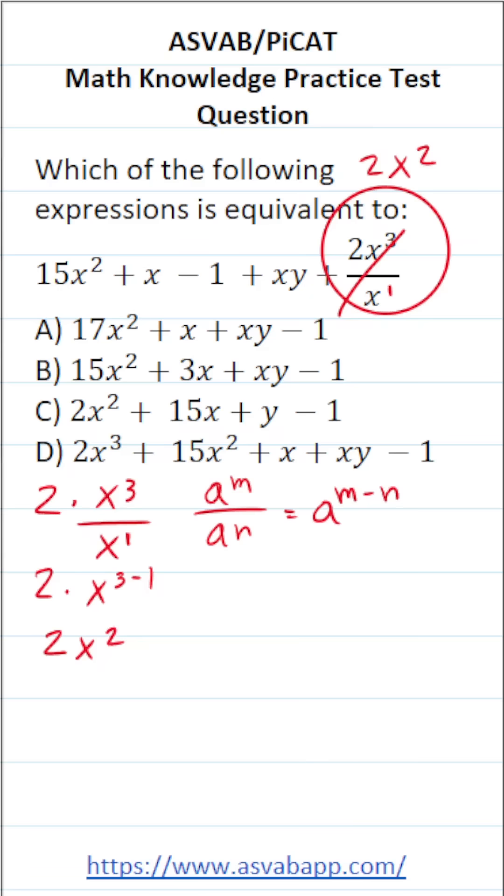So let me go ahead and rewrite this and now see if there are any like terms we can combine. Again, we have 15x squared plus x minus 1 plus xy plus 2x squared. Now, like terms have the same letter variables raised to the same power. And right away, you can see 15x squared and 2x squared have the same letter variable raised to the same power.